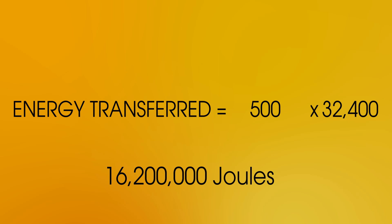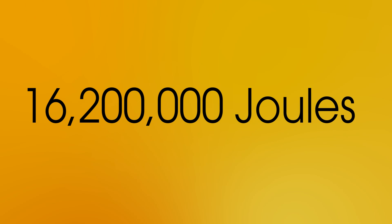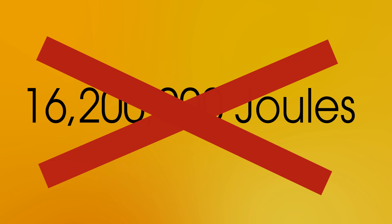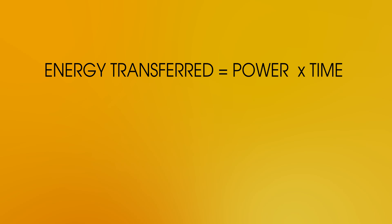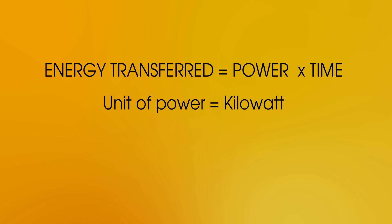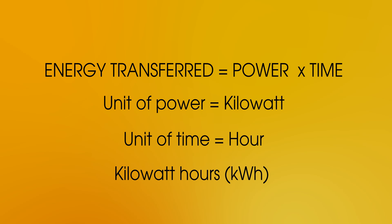Now, that seems a bit big — you'd be really worried if you got an electricity bill with that number on it, and it would be really hard for the power companies to work out the cost. So what the companies do is use a better unit for energy. They still use energy as power times time, but now they use the kilowatt for their unit of power and the hour for their unit of time, giving kilowatt hours as a unit for energy transferred.